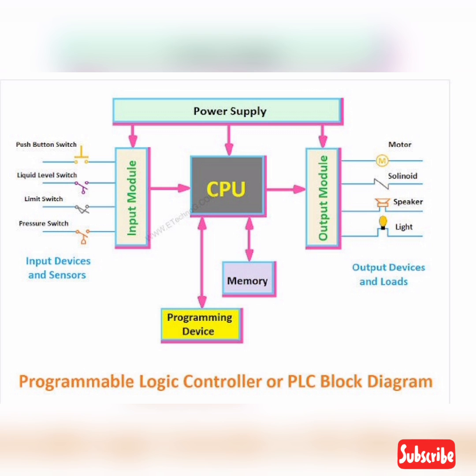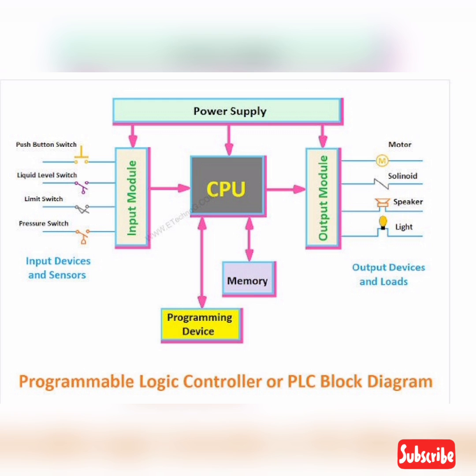Now let's discuss each block of the Programmable Logic Controller circuit, which will help you understand the working principle of PLC. CPU — Central Processing Unit: it is the main part of the PLC. It processes all the instructions required for working of the circuit. First, we store the program or instructions in memory. In operation, the CPU takes commands from the input module, then processes them and ultimately gives the output to the output module.